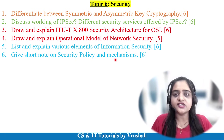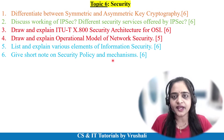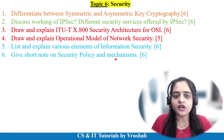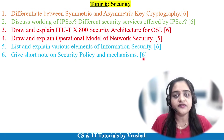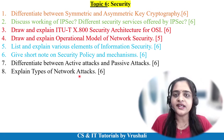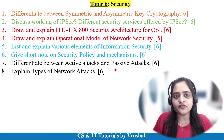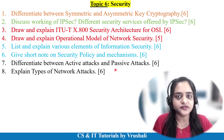Questions based on information security include: list and explain various elements of information security, or write a short note on security policy and mechanism — mention at least 4 to 6 security policies and mechanisms with real-life examples. The next question covers types of network attacks: explain active attack and passive attack for 6 marks, or the difference between them in tabular format with real-life examples.